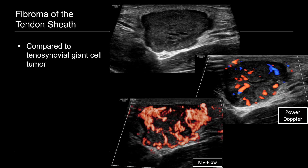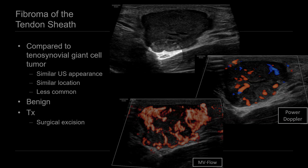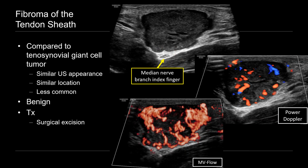Compared to tenosynovial giant cell tumor, fibromas of the tendon sheath will have a similar ultrasound appearance and occur in similar locations, so you do want to include it in your differential diagnosis. However, they're much less common. These are benign — malignancy has not been described with these lesions. Treatment tends to be surgical excision. We're looking again at that median nerve branch of the index finger, this time in short axis — just a reminder that whenever you're evaluating a cystic or solid mass adjacent to tendinous or neural structures, the relationship is important to mention for surgical planning, and it may explain any nerve-related symptoms the patient may be having.